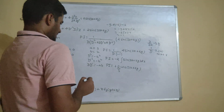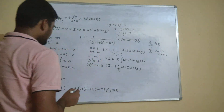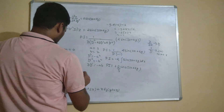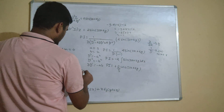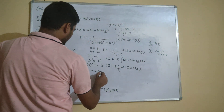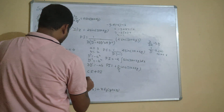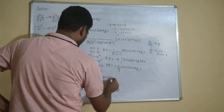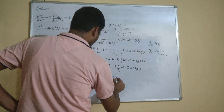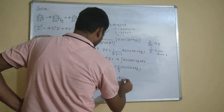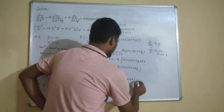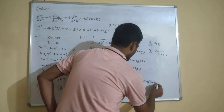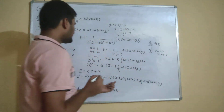CF plus PI is your final answer. We don't write a constant here. So Z = CF + PI. CF was F₁(Y) + F₂(Y + 2X) + X·F₃(Y + 2X), and PI is (2/3)cos(3X + 2Y). So the final answer is: Z = F₁(Y) + F₂(Y + 2X) + X·F₃(Y + 2X) + (2/3)cos(3X + 2Y).